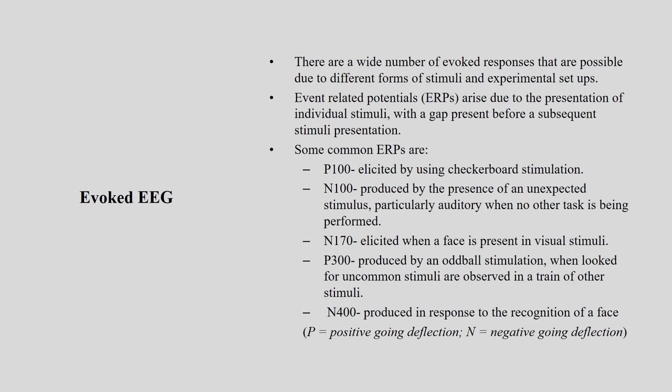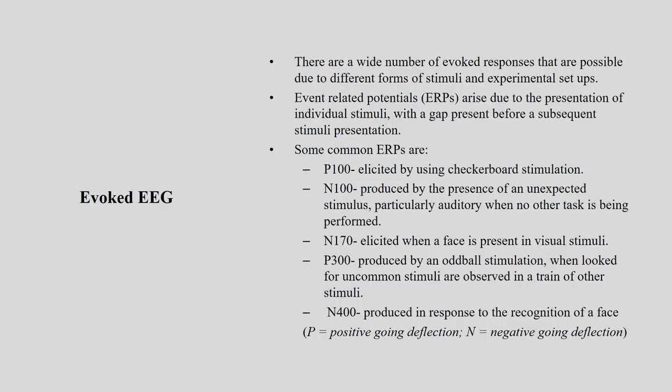There are a wide number of evoked responses due to different stimuli and experimental setups. Event-related potentials (ERP) arise due to the presentation of individual stimuli with a gap before the next stimulus. Common ERPs include: P100, elicited by checkerboard stimulation; N100, produced by unexpected auditory stimuli when no other task is being performed. Here P means positive deflection and N means negative deflection.